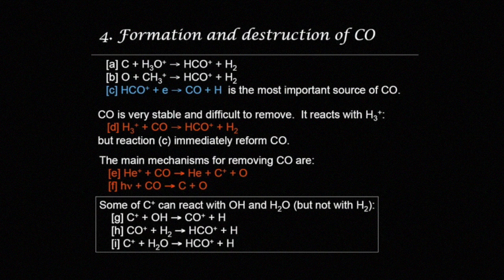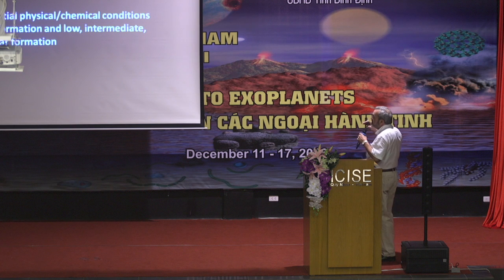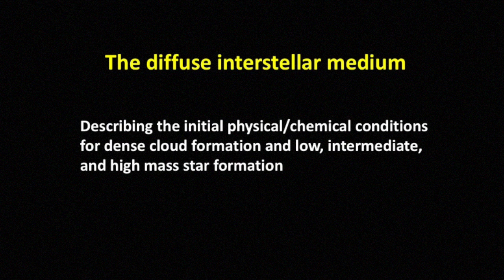The key molecule CO is formed through the reaction of atomic carbon with H3O+, producing HCO+, and the recombination of HCO+ produces CO. Now I will show you what we detect in the diffuse interstellar medium, then dense molecular clouds, and finally hot cores and photodissociation regions.